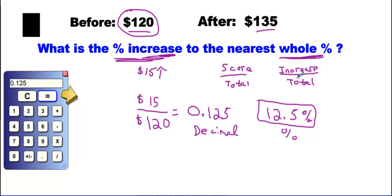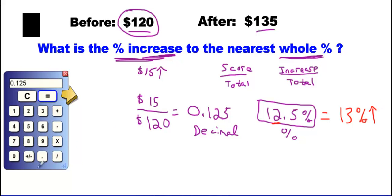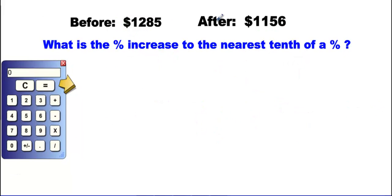Now we look at the question again: it says to the nearest whole percent. We round 12.5 to the nearest whole number — the digit after the 2 is 5, so the 2 rounds up to 3 — giving us a 13% increase.